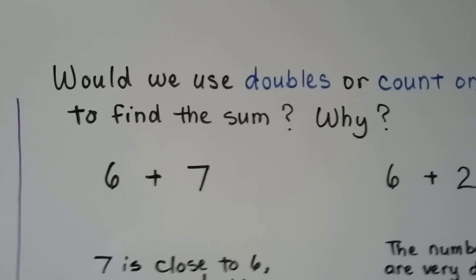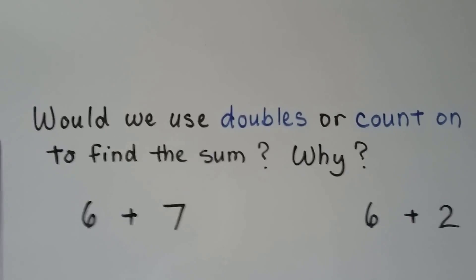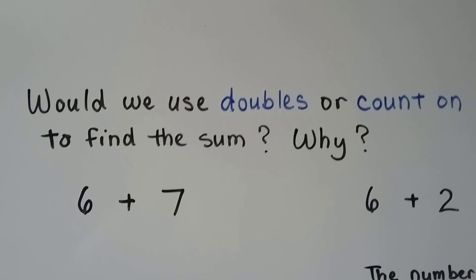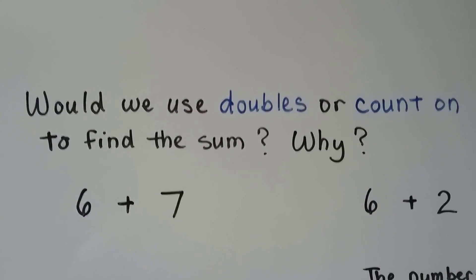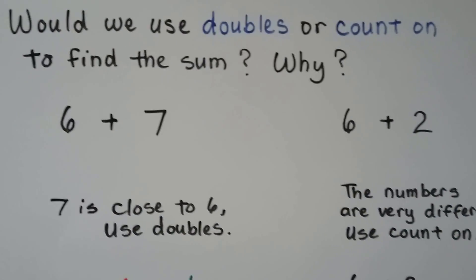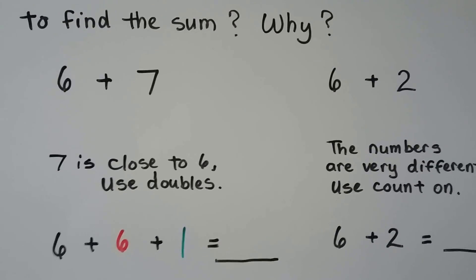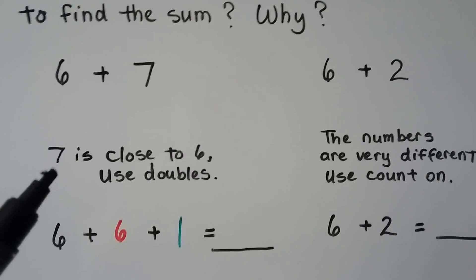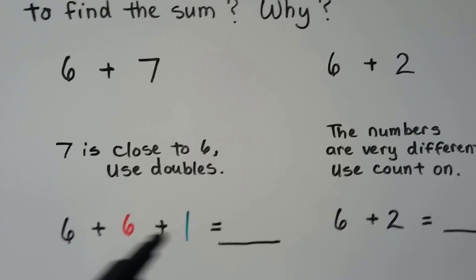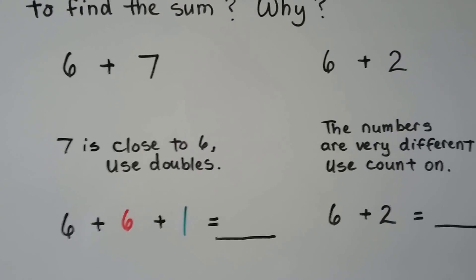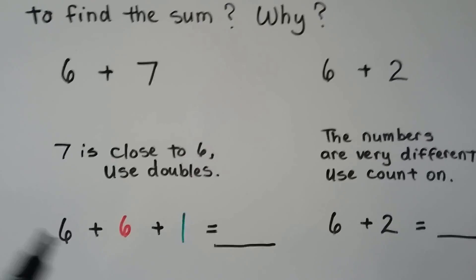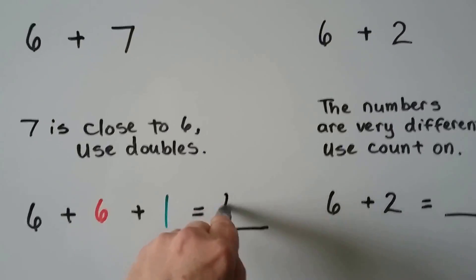Would we use doubles or count on to find the sum, and why? For 6 plus 7, which would be easier? 7 is close to 6, so we could use doubles. We break the 7 into a 6 and a 1 — now we have doubles: 6 plus 6. If we know 6 plus 6 is equal to 12, then one more would be 13. That means 6 plus 7 is equal to 13.